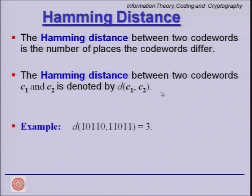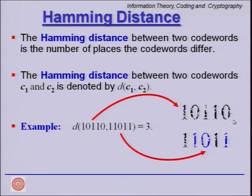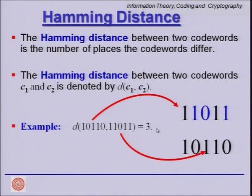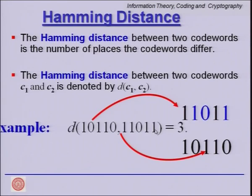As a simple example, if we have two vectors 1 0 1 1 0 and 1 1 0 1 1, we count the number of places where they differ. They are of the same length, and comparing them we find they are different at three places marked in blue. Hence, the Hamming distance is 3.